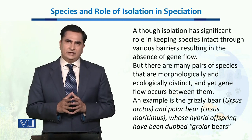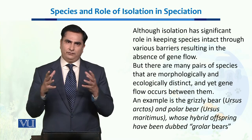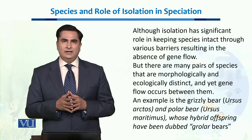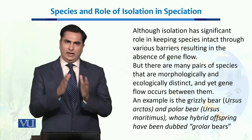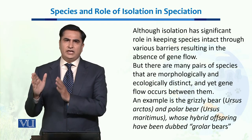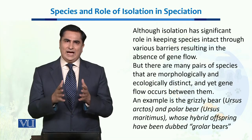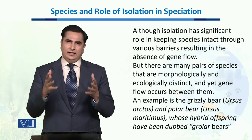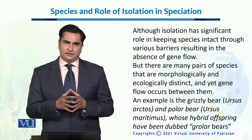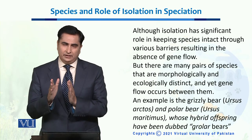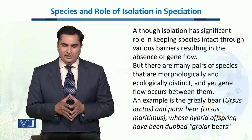However, there are many pairs of species observed in nature that, even though they were morphologically and ecologically distinct from each other, gene flow still occurred between them through interbreeding. An example is the grizzly bear and the polar bear — the grizzly bear lives in temperate environments while the polar bear lives in extreme cold, yet despite habitat isolation, their interbreeding has produced a hybrid offspring called the grolar bear. Sometimes this can happen, but mostly species remain intact as a result of reproductive isolation.